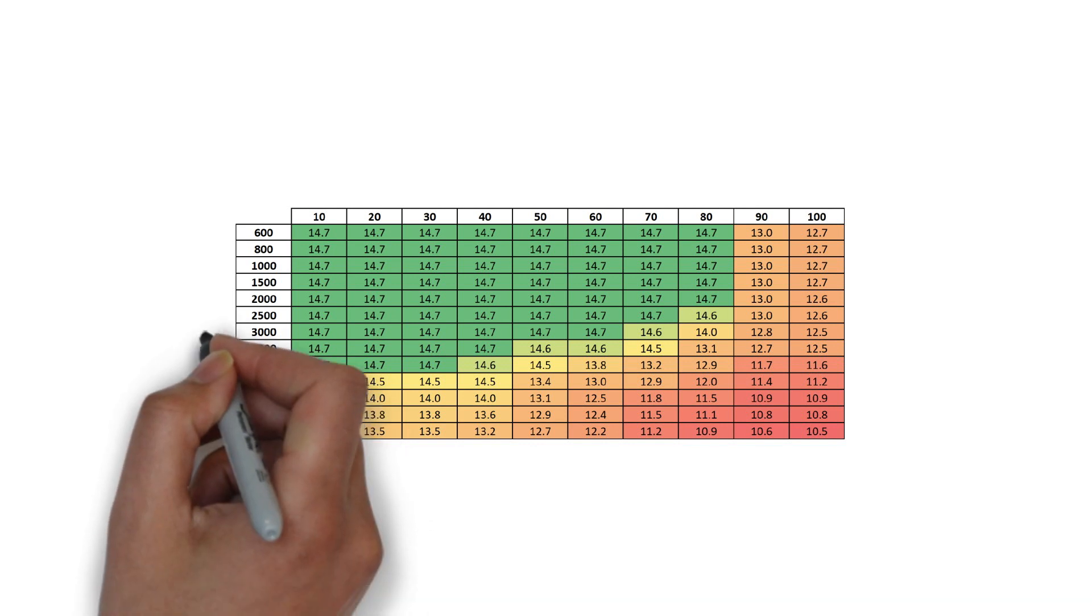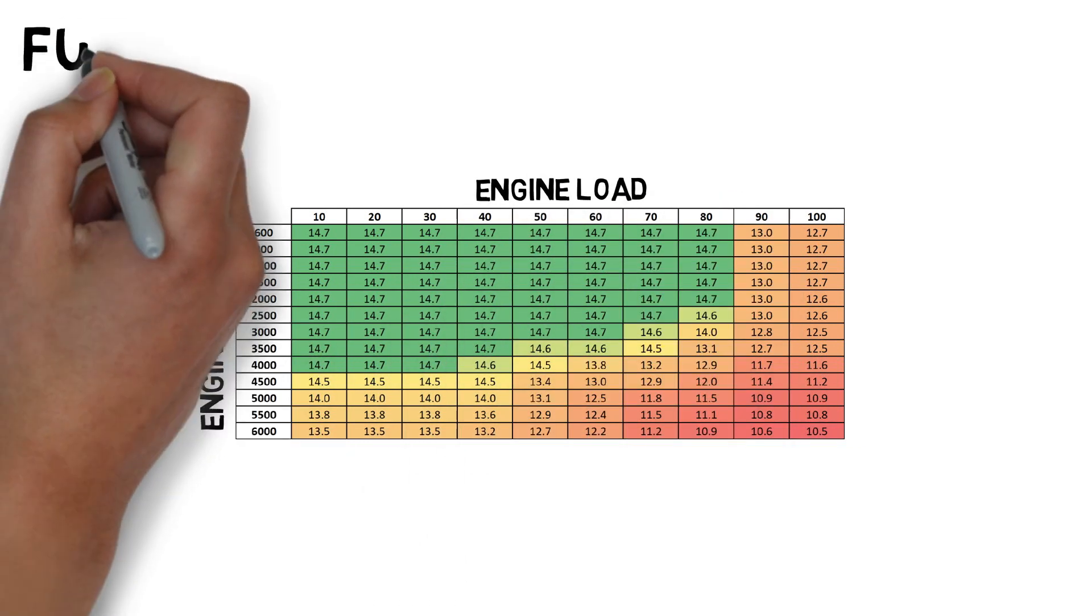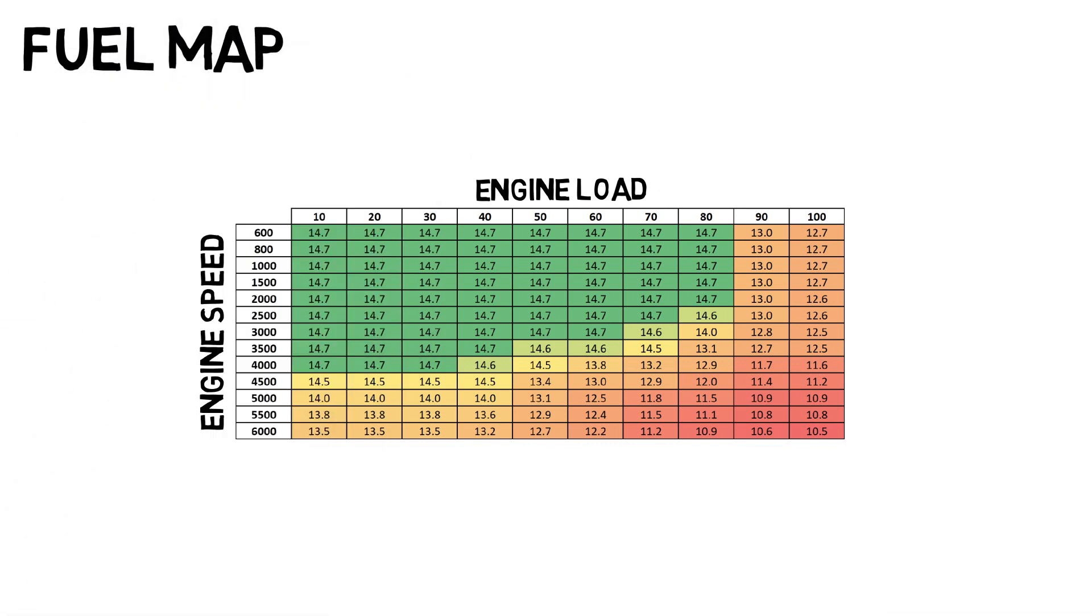Maps are tables with parameters such as engine speed and load in the X and Y axis. One of these tables is the so-called fuel map and that's our topic for today.